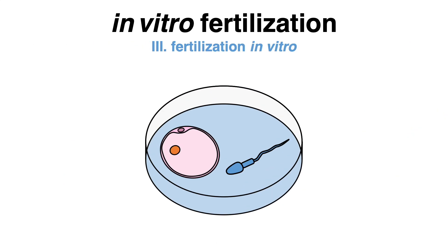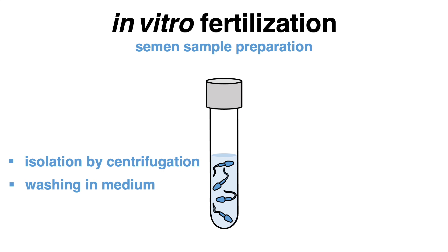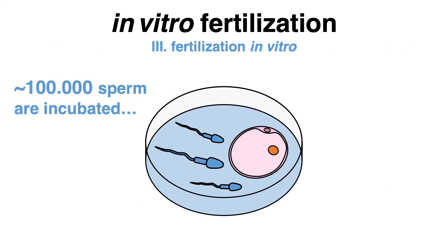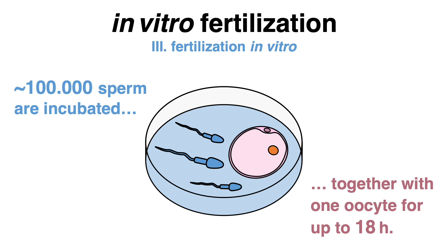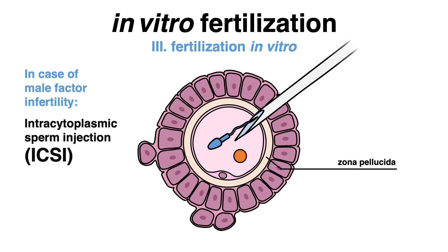What follows is fertilization in a petri dish. The semen sample is prepared by isolating sperm using centrifugation and washing them in medium with a high protein concentration to promote capacitation, a process essential for sperm to be able to fertilize the oocyte. Up to 100,000 sperm are incubated together with an oocyte for up to 18 hours. Male factor infertility may require a different approach, where one immobilized sperm is directly injected into the oocyte — this bypasses the challenge for the sperm to penetrate the zona pellucida, a barrier surrounding the oocyte.